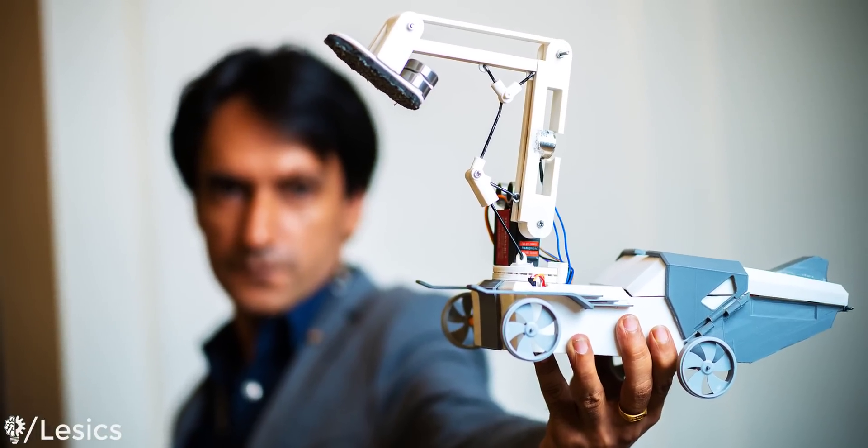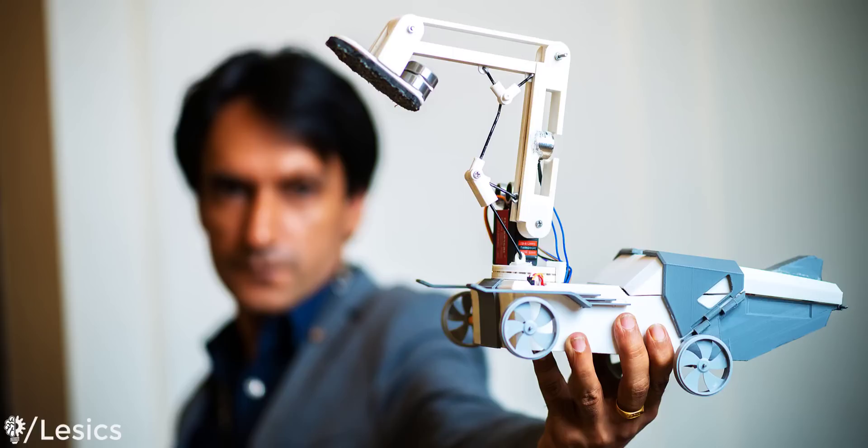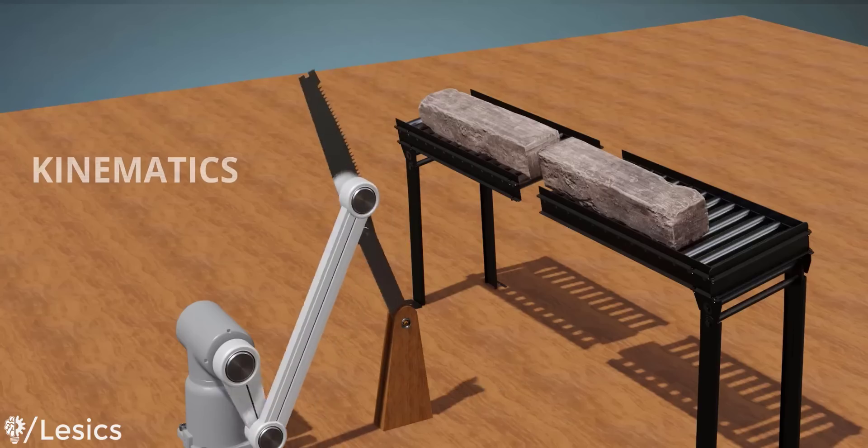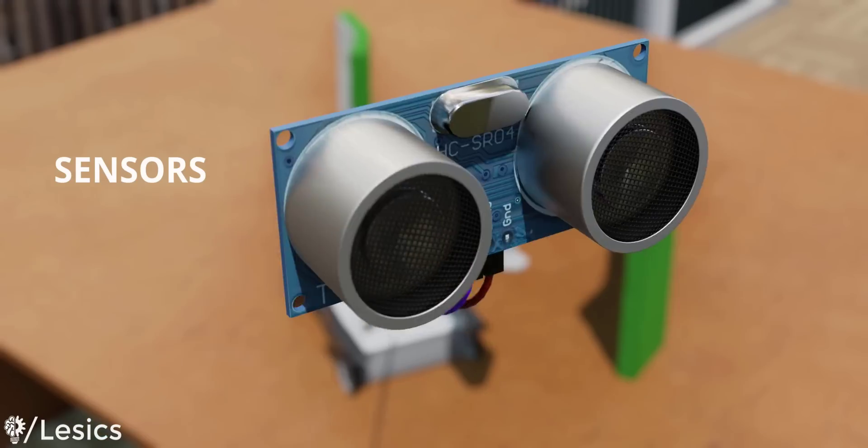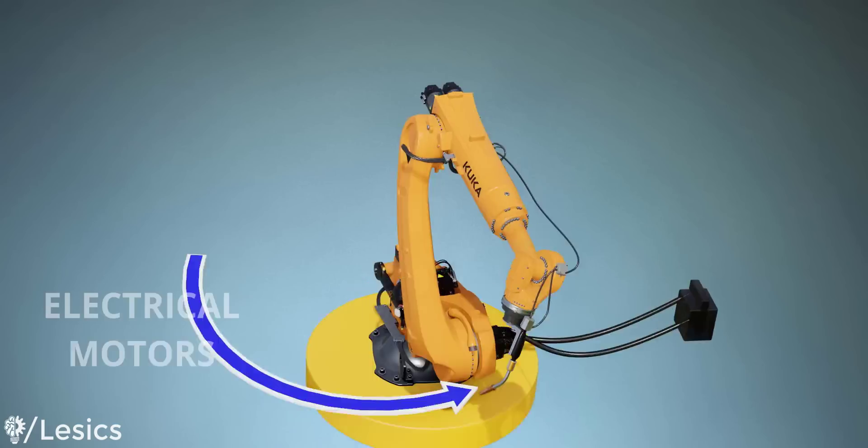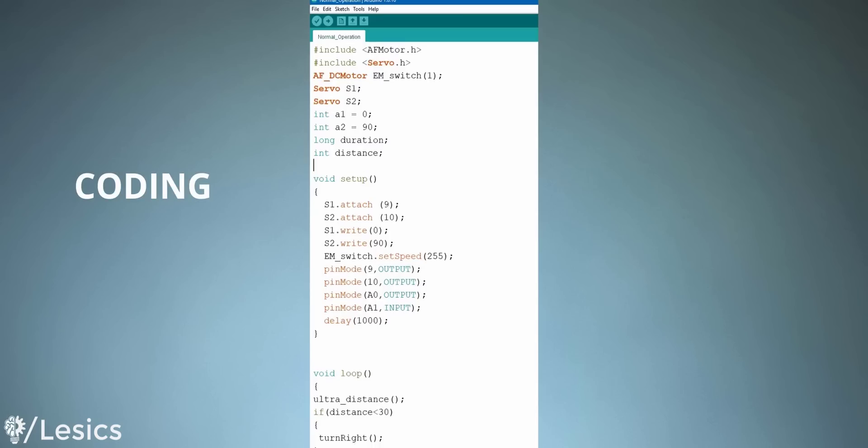Welcome to the Introductory Robotics course by Lesics. To be a successful robotics engineer, you must gain knowledge in four different but interconnected fields: kinematics, sensors and controllers, electrical motors, and coding.